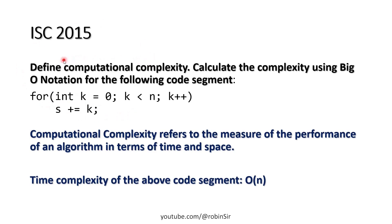Again in ISC 2015 one question came. Define computational complexity. Calculate the complexity using Big O notation for the following code segment. So computational complexity refers to the measure of the performance of an algorithm in terms of time and space. Now again when we look at this loop, this loop is executing n times. And that's why the time complexity of the above code segment would be Big O of n.